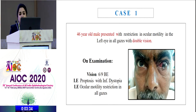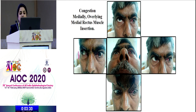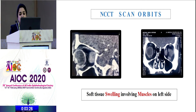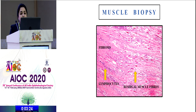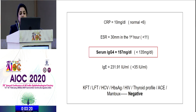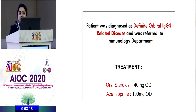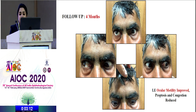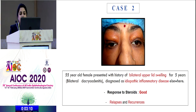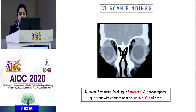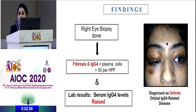One case involved a 46-year-old male presenting with double vision. Left eye proptosis with inferior dystopia was seen, along with restricted oculomotility in all gazes and congestion. CT scan showed swelling involving the muscles. Muscle biopsy showed fibrosis, lymphocytes, and IgG4-positive cells, and serum levels were raised. He was diagnosed with definite IgG4 disease and treated with oral steroids and azathioprine. On four-month follow-up, motility improved and proptosis and congestion reduced. Another patient presented with bilateral dacroadenitis, ultimately diagnosed as orbital IgG4 disease.